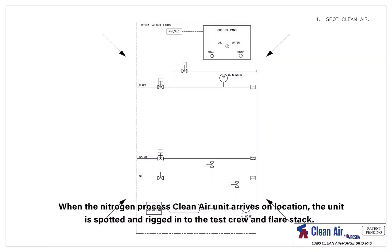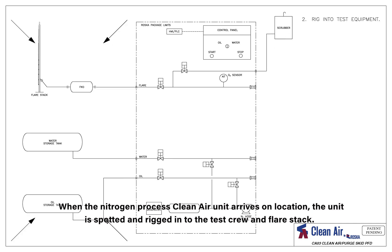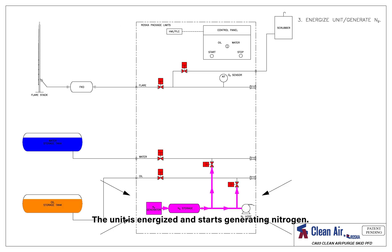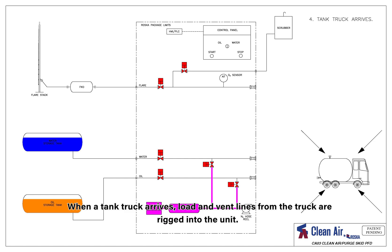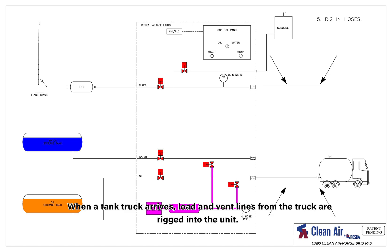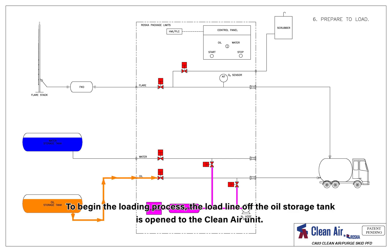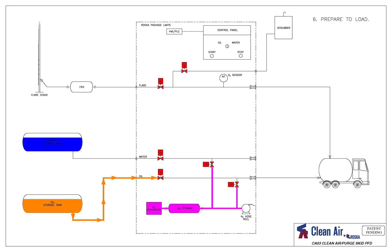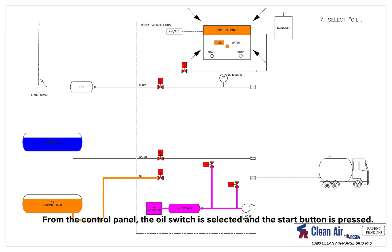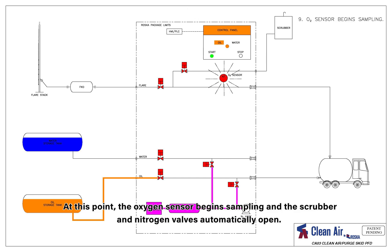When the nitrogen process Clean Air unit arrives on location, the unit is spotted and rigged into the test crew and the flare stack. The unit is energized and starts generating nitrogen. When a tank truck arrives, load and vent lines from the truck are rigged into the unit. To begin the loading process, the load line off the oil storage tank is opened to the Clean Air unit. From the control panel, the oil switch is selected and the start button is pressed. At this point, the oxygen sensor begins sampling and the scrubber and nitrogen valves automatically open.